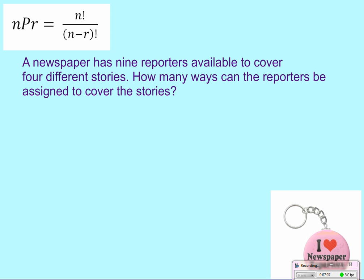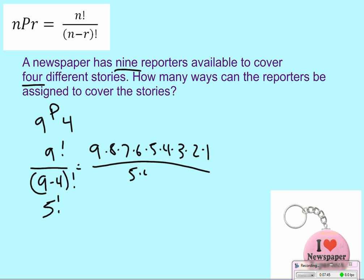So, a newspaper has 9 reporters available to cover 4 different stories. How many ways can the reporters be assigned to cover the stories? So, you've got 9 reporters, you're sending a reporter off to cover a story. You're not sending that 1 reporter off to cover more than 1 story. No, you're saying, person A, go cover story 1. Person B, go cover story 2, and so on. So, if you've got 9 reporters to cover 4 stories, that's going to look like this. So, mathematically, it says 9P4. Chop, chop, chop, chop, chop, cancel. So, you've got 9, 8, 7, 6. So, 72 times 42 is going to be 3,024. So, that's what we're looking at.